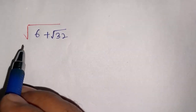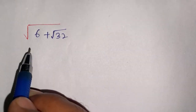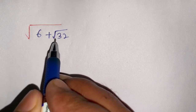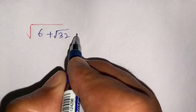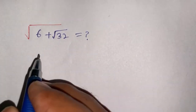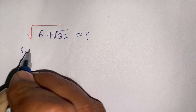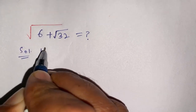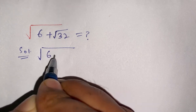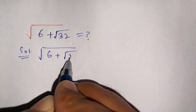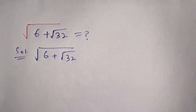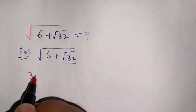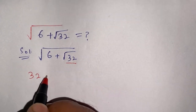Hello everyone. In today's video we are going to solve this radical problem: square root of 6 plus square root of 32. We have to simplify it. Let us solve this. We can write it as: solution — square root of 6 plus square root of 32. Now we break down 32.